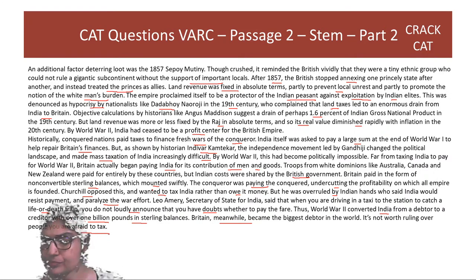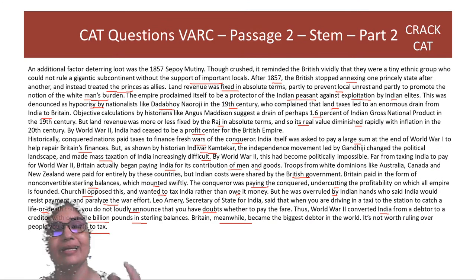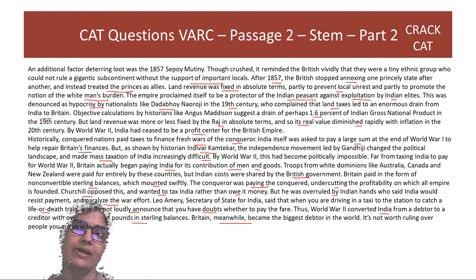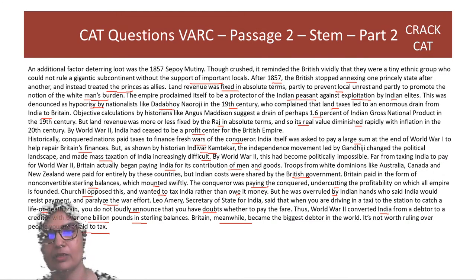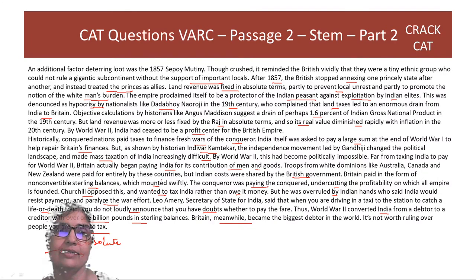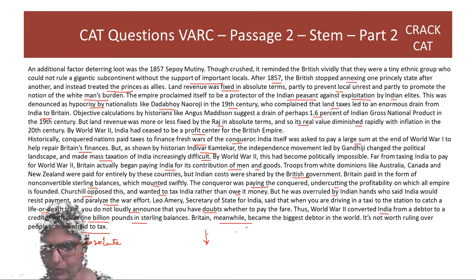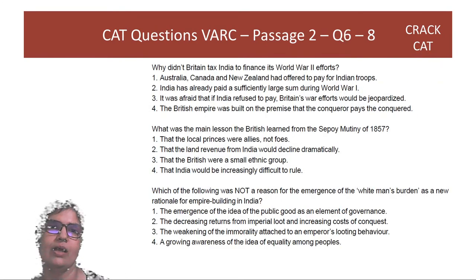World War II converted India from a debtor to a creditor — over one billion pounds in sterling balances. Britain meanwhile became the biggest debtor in the world. 'It's not worth ruling over people you are afraid to tax.' The whole passage argues that the British were in India as long as it was profitable, and as profitability eroded — through fixed land revenues, Gandhi's movement, and WWII finance — Britain moved out.